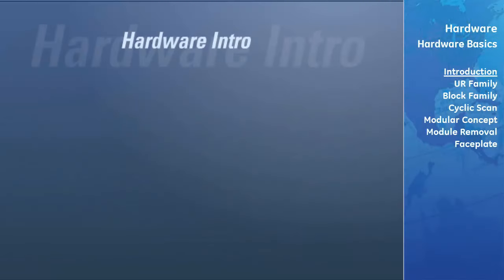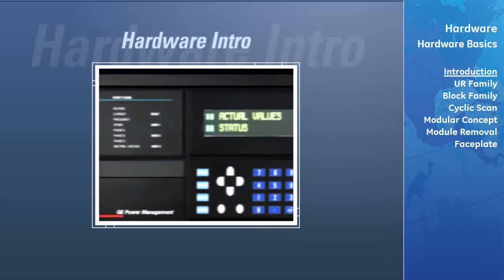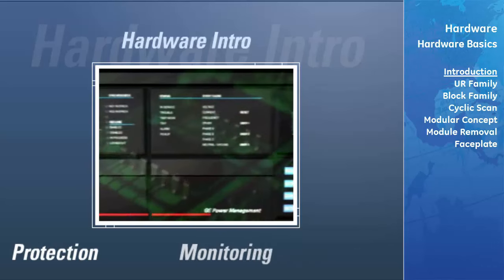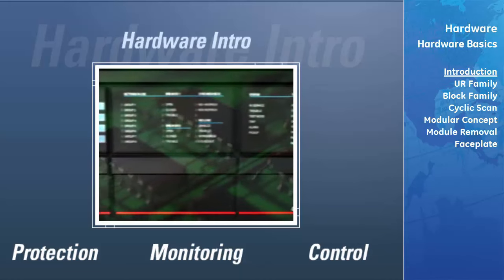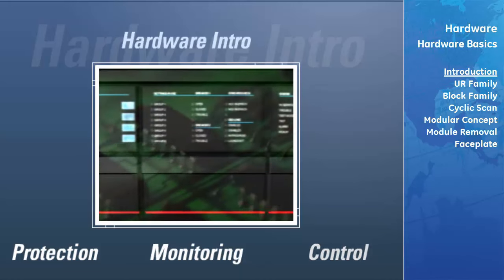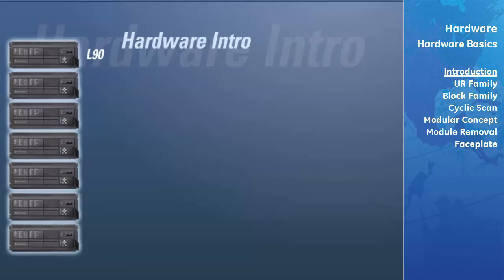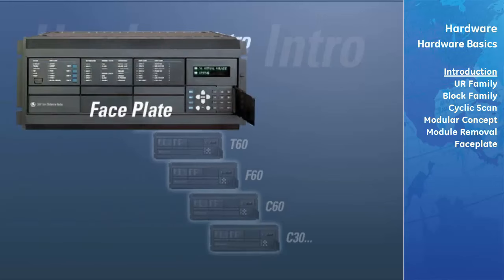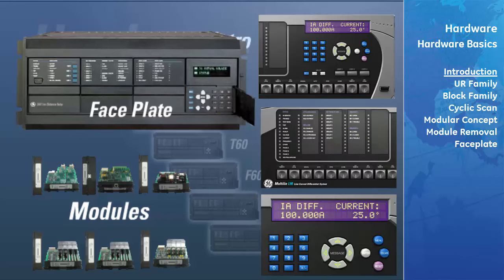The Universal Relay is central to substation and plant automation. It provides protection, monitoring, and control of power systems. All members of the UR family share a common hardware packaging, faceplate panels, function modules, and firmware programs. They are all supported by UR PC software.